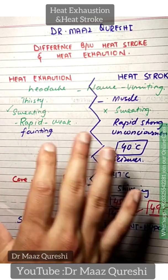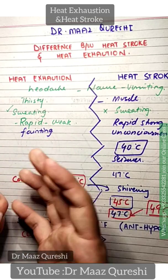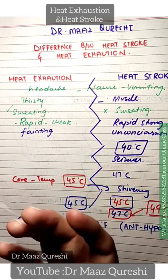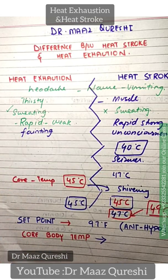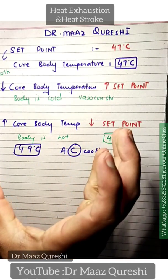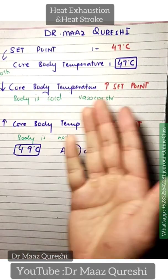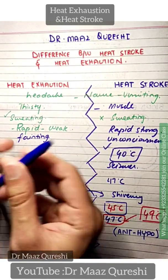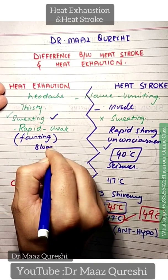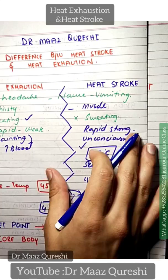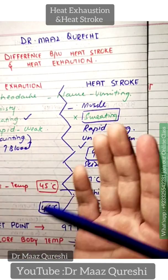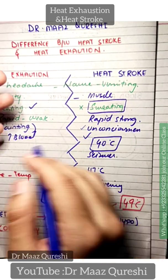In heat exhaustion, your body temperature is high but you are still sweating, meaning your anterior hypothalamus is still intact. However, in heat stroke, there is discoordination. The set point is normal, but the core body temperature is high. Heat exhaustion will always present with sweating, which leads to reduced blood volume and fainting. In heat stroke, sweating is impaired — you are unconscious, disoriented, and the core body temperature is more than 40 degrees Celsius.